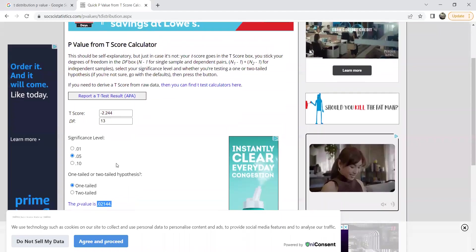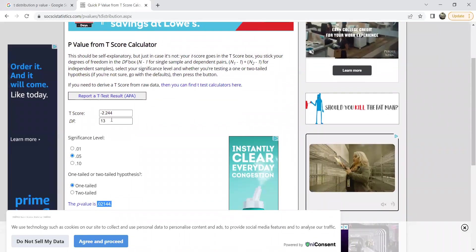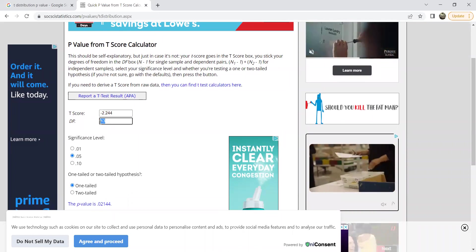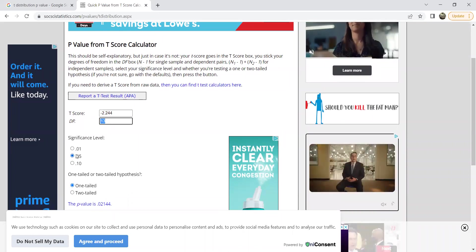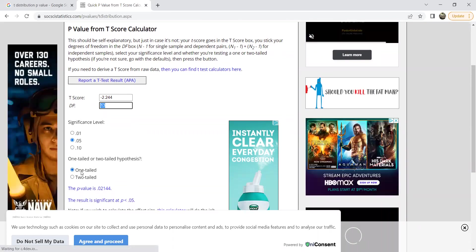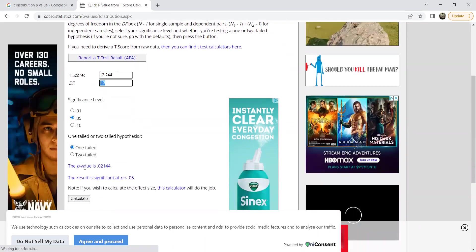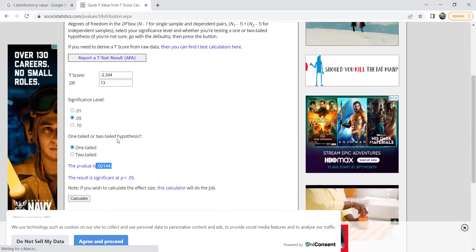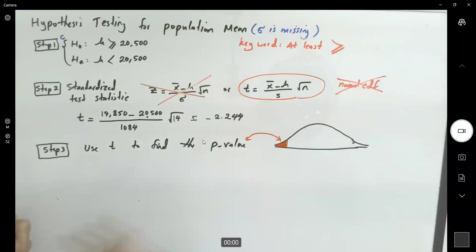And the p-value is going to be 0.02144. This is the website that you're using. The t-score, degrees of freedom, 14 minus 1, which is 13. Level of significance, 5%. One-tailed hypothesis testing. And the p-value is 0.02144. So the p-value in this area is about 2%.